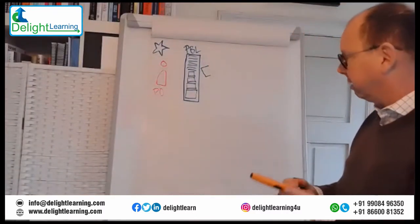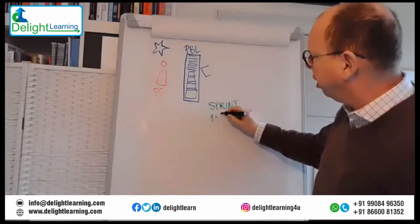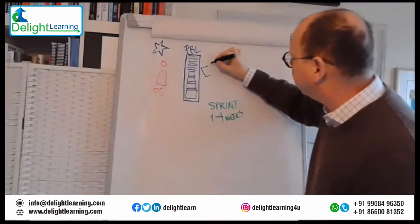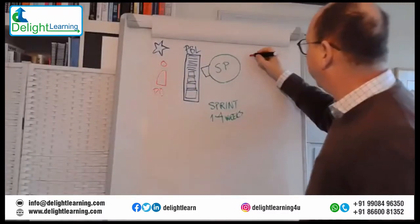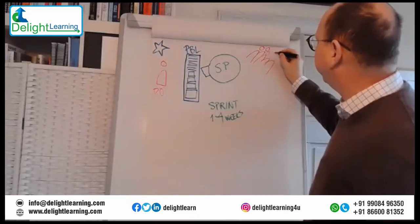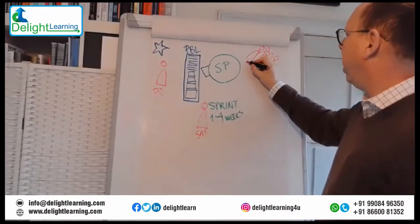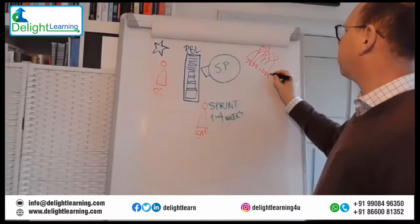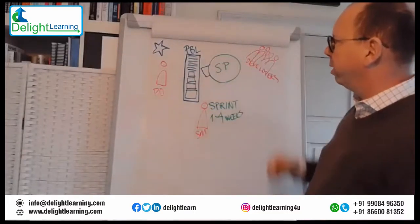The sprint in Scrum is a time-boxed event, and that's at the center of everything — one, two, three, or four weeks long. The first thing that happens is a sprint planning event, where we want the entire Scrum team to be present: the product owner, the developers, and the Scrum master. The Scrum team consists of one product owner, one Scrum master, and developers. The product backlog is input for sprint planning.